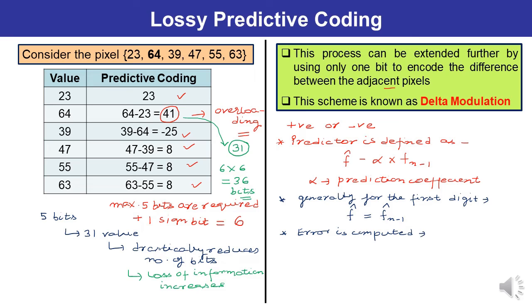It is written as en which is equal to f n minus f n cap. Or you can write this as f n minus f of n minus 1 cap.